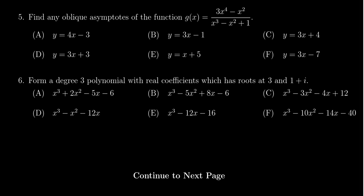In this video, we provide the solution to question number 5 from practice exam number 3 for Math 1050. We're given a rational function, g of x equals 3x to the 4th minus x squared over x cubed minus x squared plus 1. And we're asked to find any oblique asymptotes, if there are any.